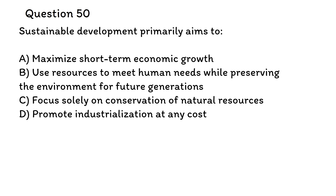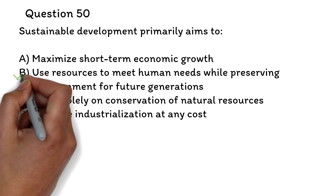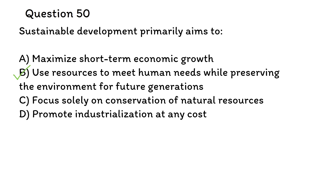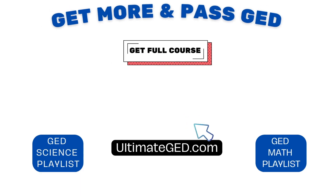Question 50. Sustainable development primarily aims to: A. Maximize short-term economic growth. B. Use resources to meet human needs while preserving the environment for future generations. C. Focus solely on conservation of natural resources. D. Promote industrialization at any cost. The correct answer is B. The goal is to use resources in a way that meets the needs of the present without compromising the ability of future generations to meet their own needs.